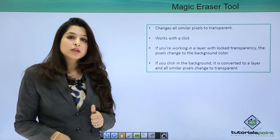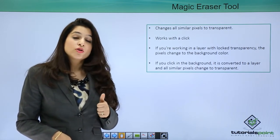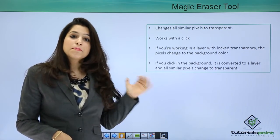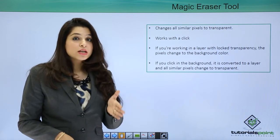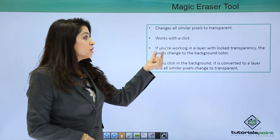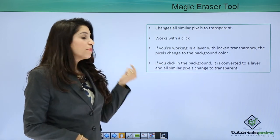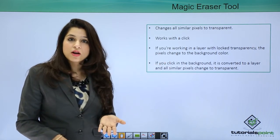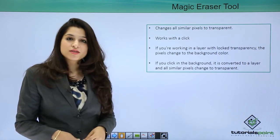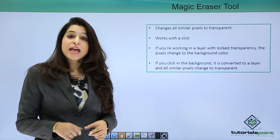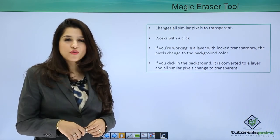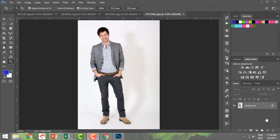It works with just a click. If you remember the magic wand tool, it also selects similar pixels, but the magic eraser tool with a click deletes those similar pixels. If you're working in a layer with locked transparency, the pixels will change to the background color; otherwise, you will get transparency.